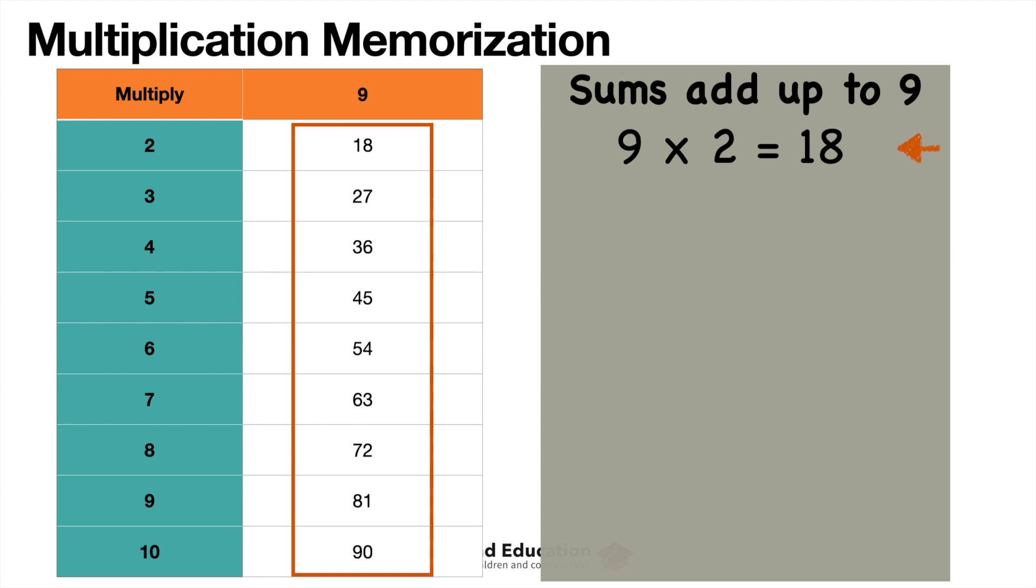So if 9 times 2, we already know that 1 and 8, that 18, that 1 and 8 equals 9. 9 times 3, well, that 2 and 7, 7 and 2, that equals 9.